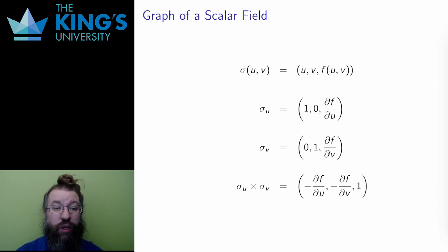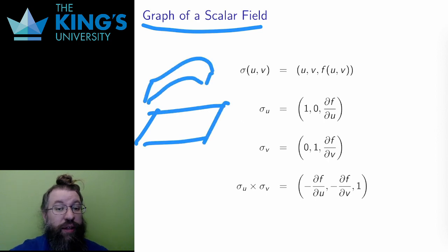So I'll start with a parametric description of the graph of a scalar field. The method for finding the normal is to take the partials in each coordinate, a vector of each, and then the cross product. For the graph of a scalar field, the partials are (1, 0, ∂f/∂u) and (0, 1, ∂f/∂v).